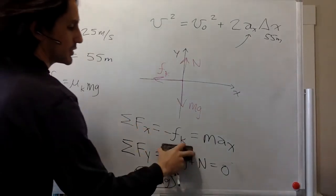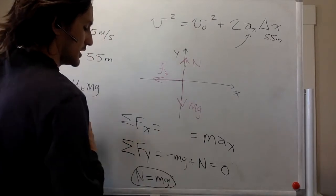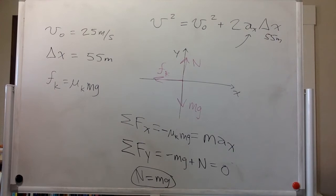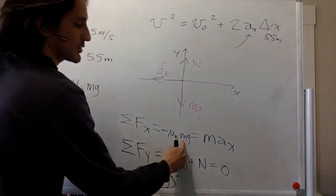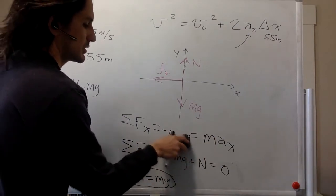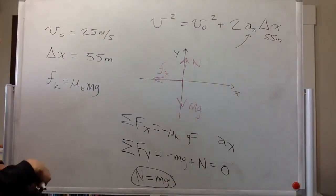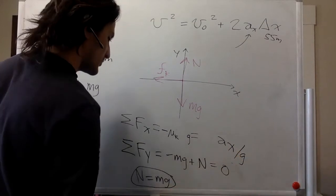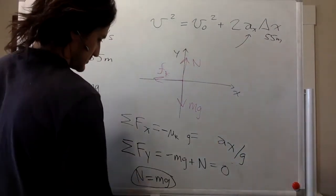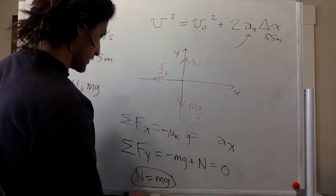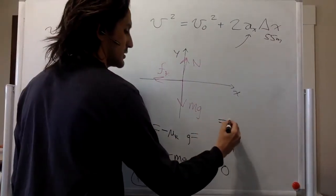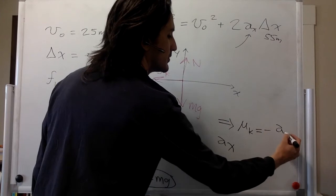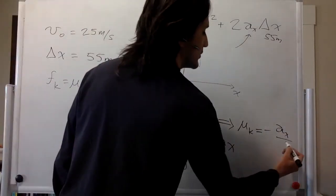And so we can put it in here too. Negative mu k mg. OK, and we have mass on both sides, so we can forget about those. And we want this mu k, so we can move this one over here, dividing. Actually, let me just rewrite it again. So this implies that mu k is negative acceleration in x divided by g.